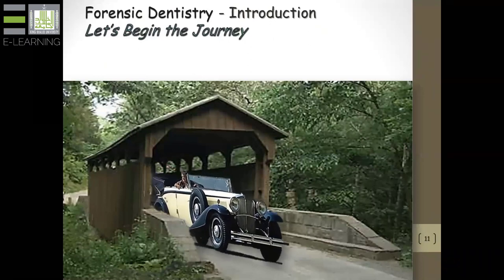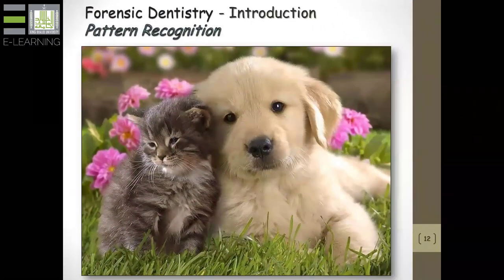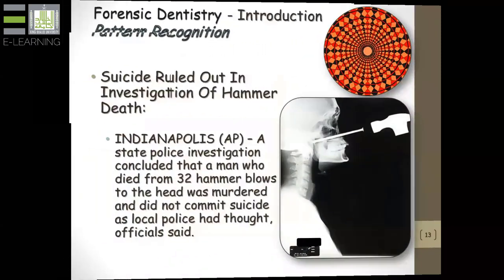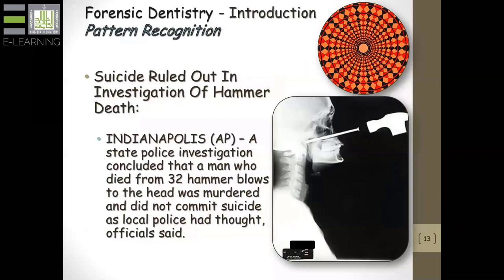Let's begin the journey. Because of the nature of many of the images, when I present this type of lecture I always have my topic separators with nice, touchy-feely things like kittens and puppies. Let's look a little bit about pattern recognition. The comment you read was an actual case reported by the Associated Press in a newspaper in Indianapolis — it wouldn't take 32 hammer blows to commit suicide, so obviously the investigators got it wrong and this was a homicide. A lot of times we misinterpret patterns, and this can be very controversial in forensics.